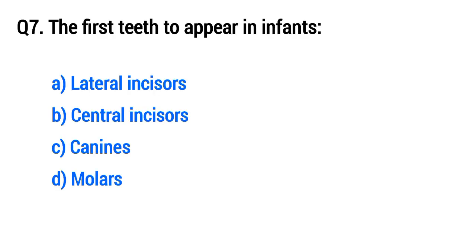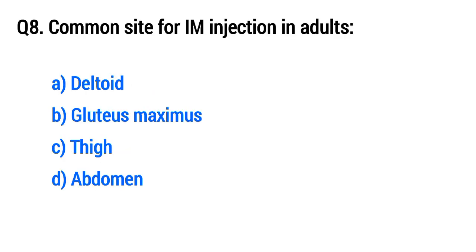Question No. 7: The first teeth to appear in infants. The right option is B, central incisors.